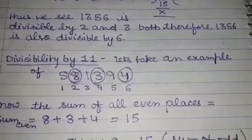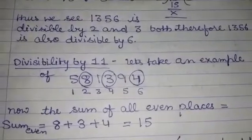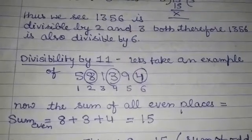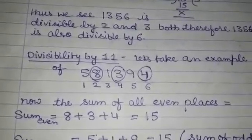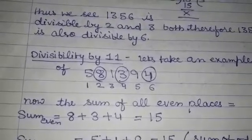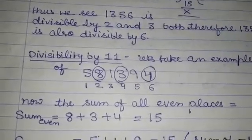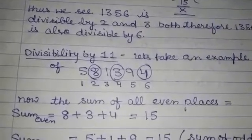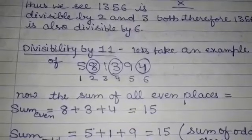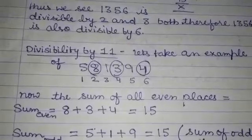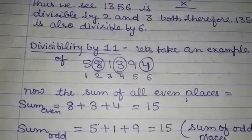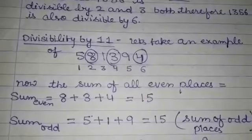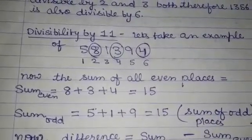Now we will see the divisibility rule of 11. Let's take an example. We have taken the number 581394 and we want to see if this number is divisible by 11. First of all we will assign position numbers to the digits: the first digit is position 1, second is 2, third is 3, fourth is 4, fifth is 5, sixth is 6. Now all the even place digits are circled. The sum of all even place digits is 8 + 3 + 4 = 15.